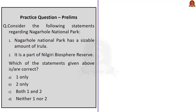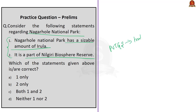The second question is about Nagarhole National Park: (1) Nagarhole National Park has a sizable amount of Irulas; (2) it is a part of Nilgiri Biosphere Reserve. From our discussion, the inhabitants are the Jenu Kuruba tribe, not the Irulas. Irulas are a particularly vulnerable tribal group in Andhra Pradesh, Tamil Nadu, and Kerala — famous for their expert understanding of snakes; some members were even called to Florida to deal with a python problem. The correct answer is option B: two only.